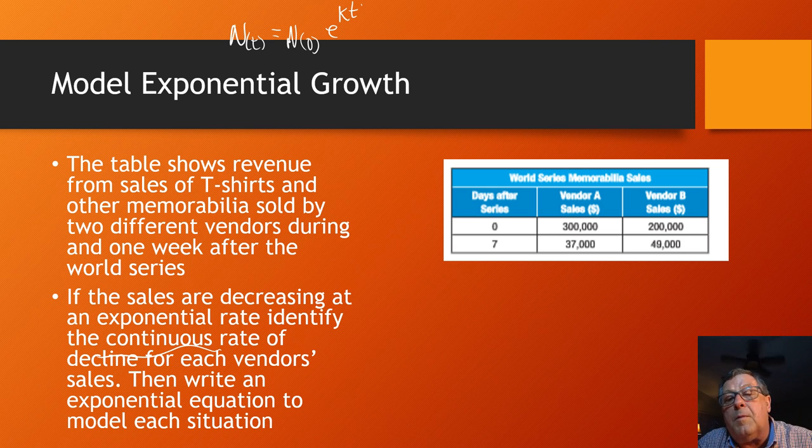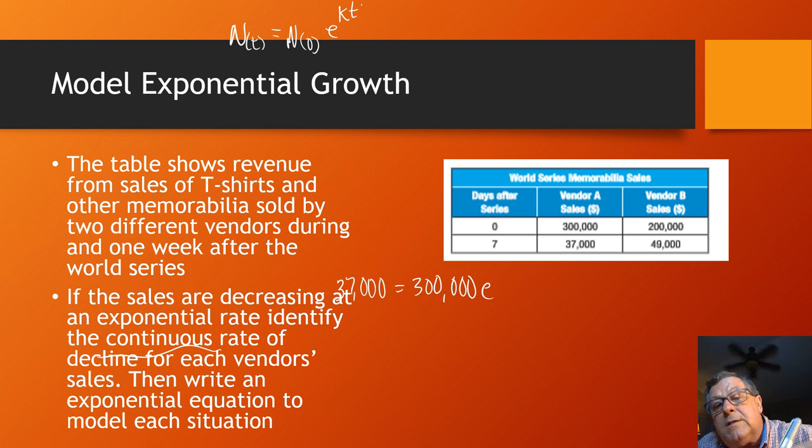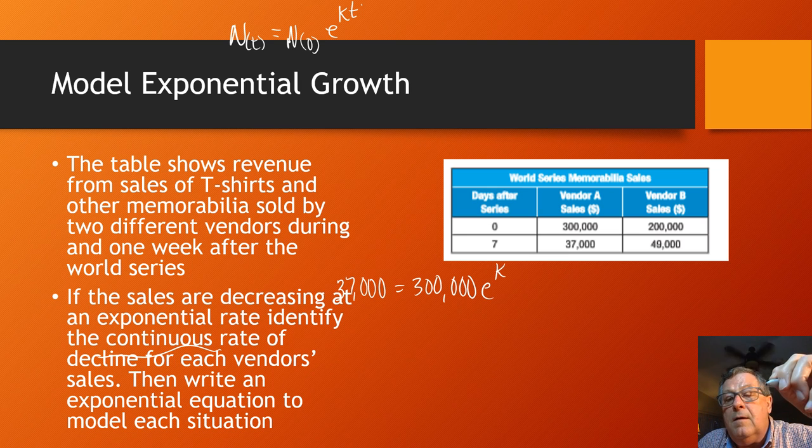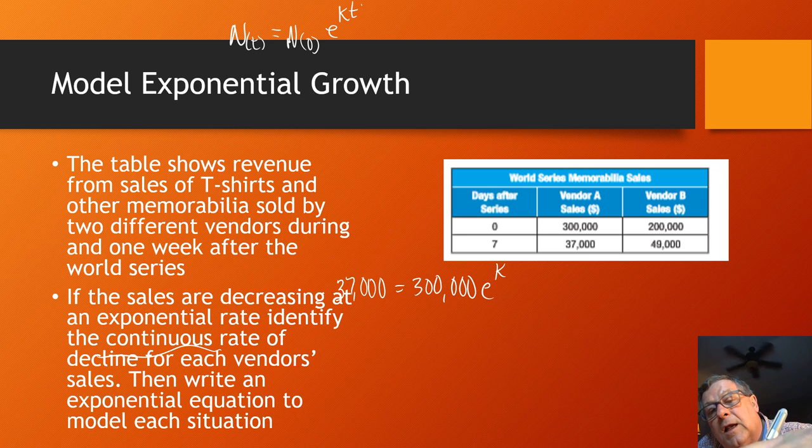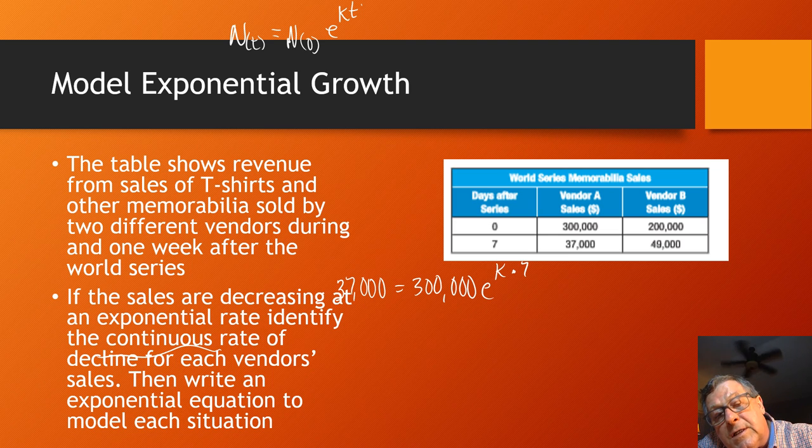I'm going to be kind of cramped for work, but let's take vendor A. So then we would, in plugging this in, I would use the 37,000 for the n(t). That's my ending period. So 37,000 equals 300,000, beginning, times the natural base raised to the power of k, that's my rate of growth or decline, in this case decline, times 7. That's the number of days I have. Now when I divide 37,000 by 300, which is going to be my first step, I get to 0.123, and it is repeating.